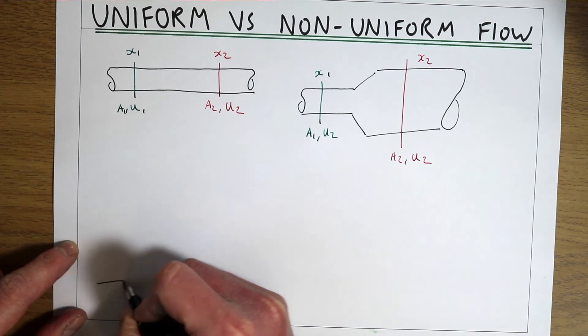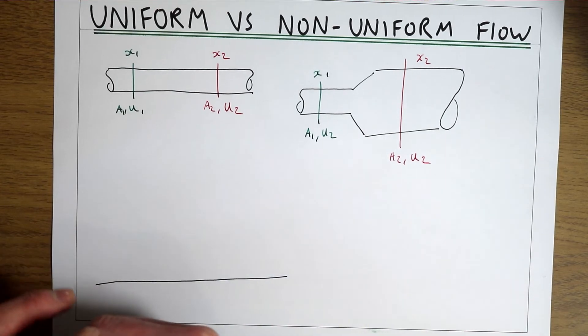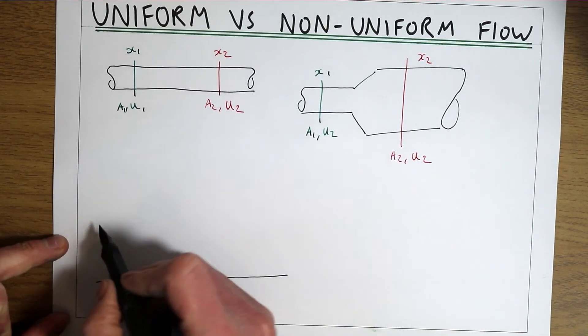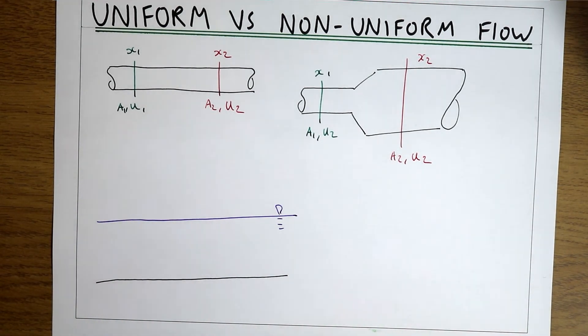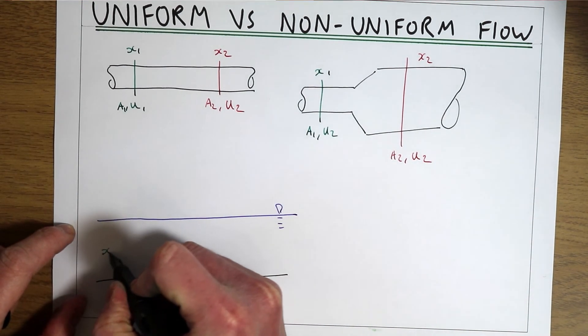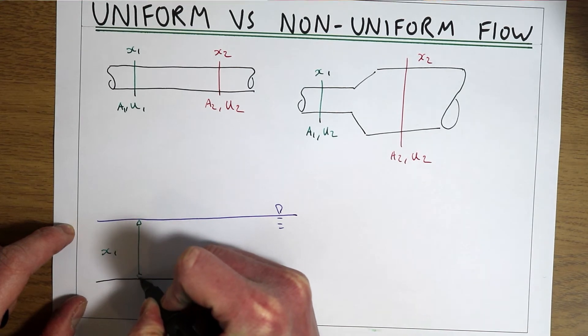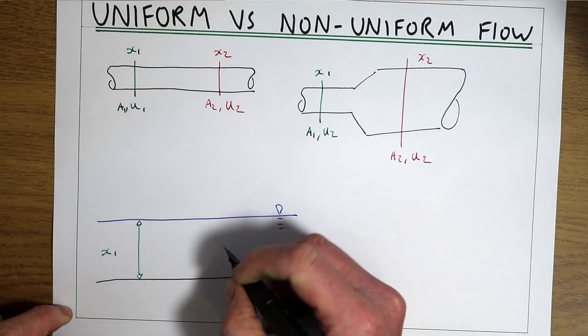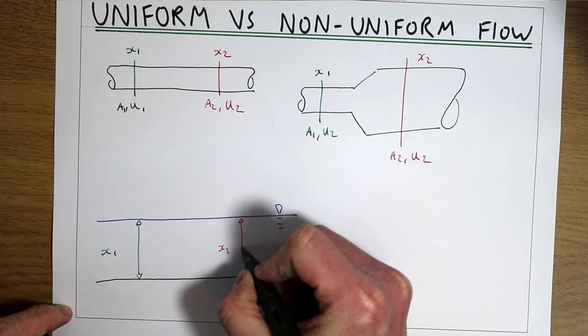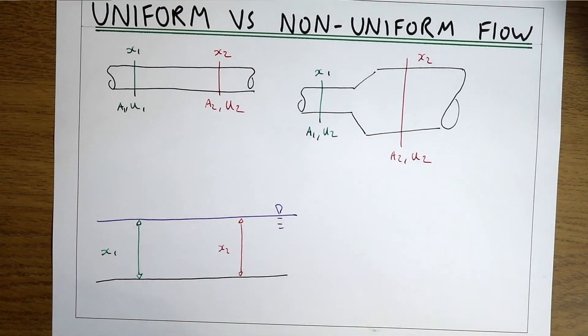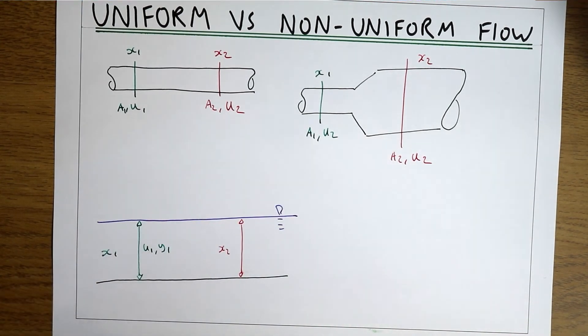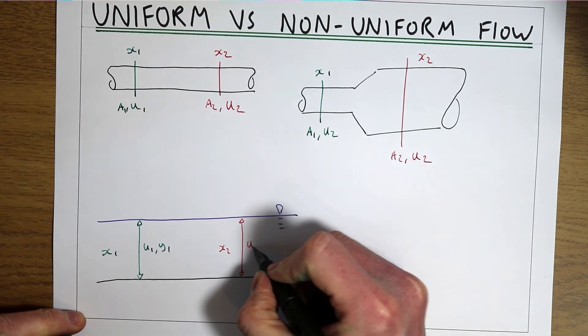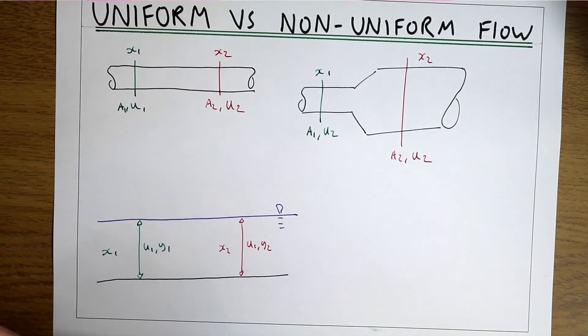So we can do exactly the same consideration for an open channel flow. So if we've got a flow where between two points, let's say x1 and again x2, if for this open channel flow the velocity and the flow depth are the same at x1 as they are at x2, then this is going to be uniform flow.